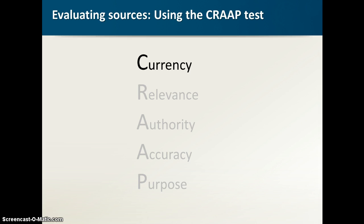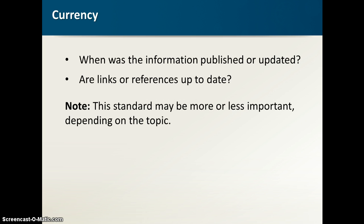The first letter in CRAAP is C for currency — this is just how new is this information. If you're looking at a website and they tell you they've got cutting-edge research on the brain but it was published 15 years ago, it might or might not be accurate, but it sure isn't cutting-edge anymore. So if you're looking in an area where information changes quickly — web design, brain research, whatever — you're going to want information that's pretty new.